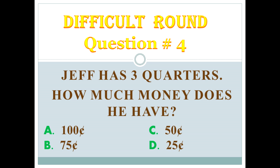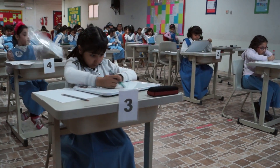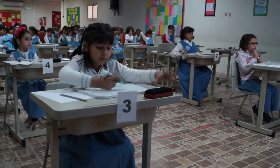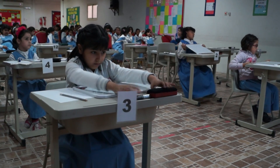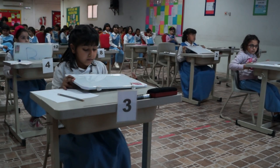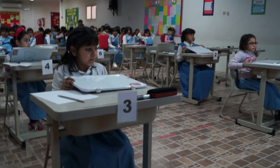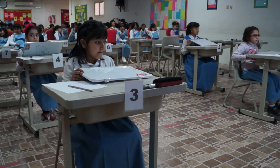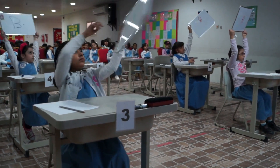How much money does he have? A: 100 cents. B: 75 cents. C: 50 cents. D: 25 cents. Again: A, 100 cents. B, 75 cents. C, 50 cents. D, 25 cents. 51 cents.